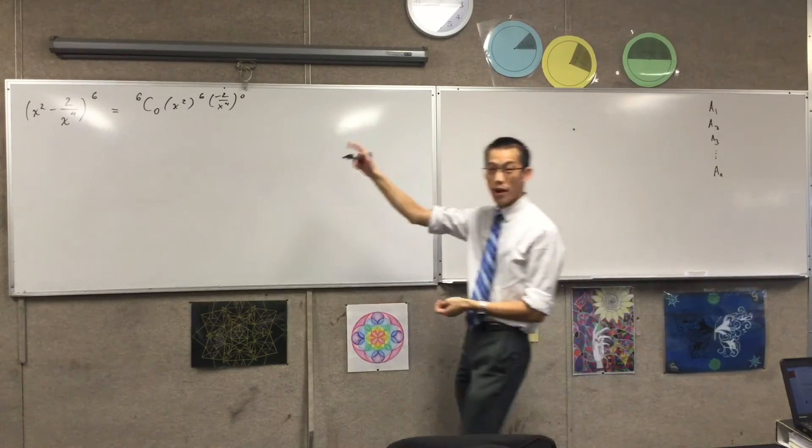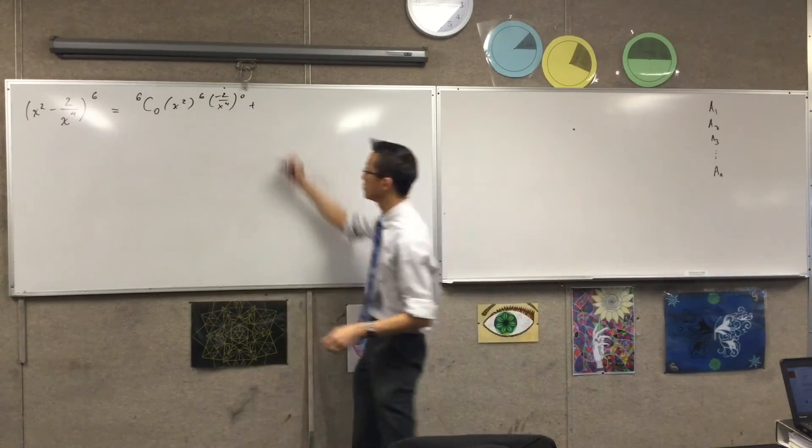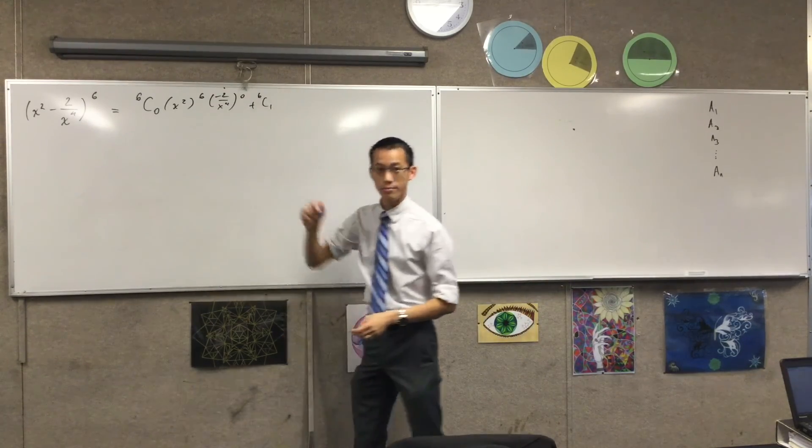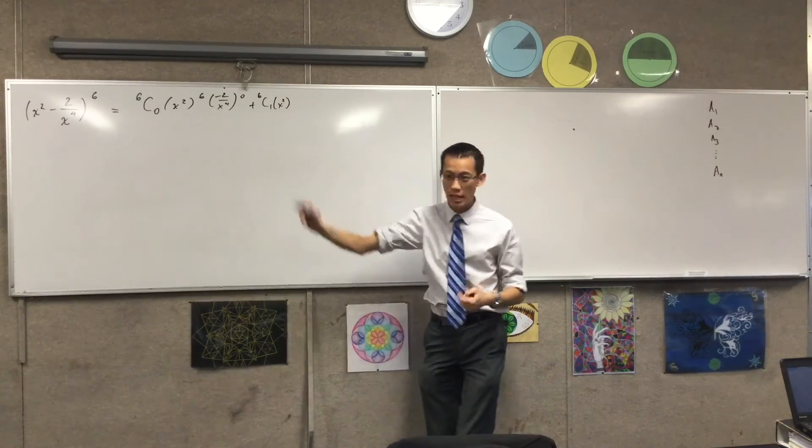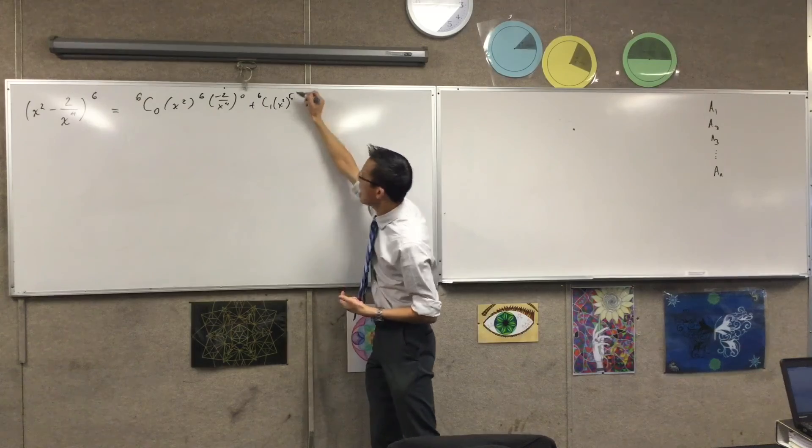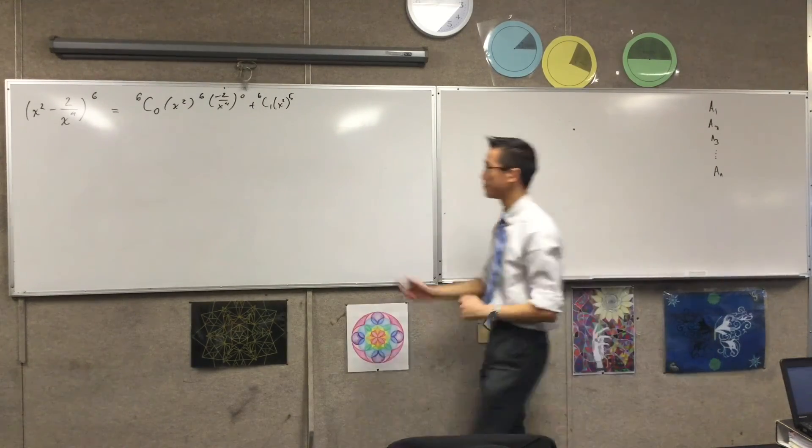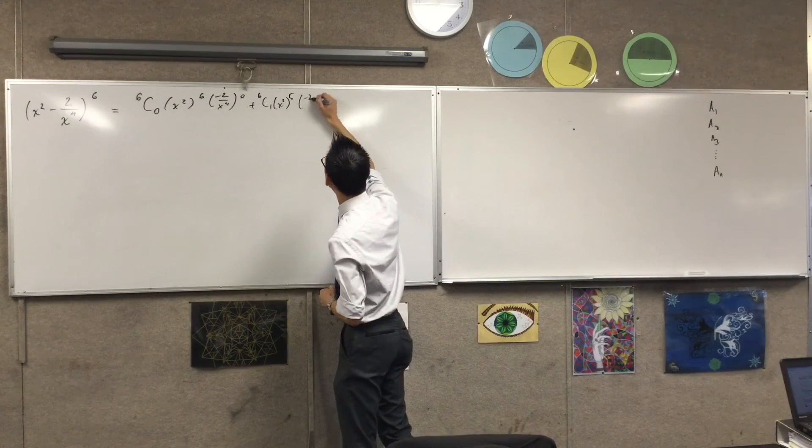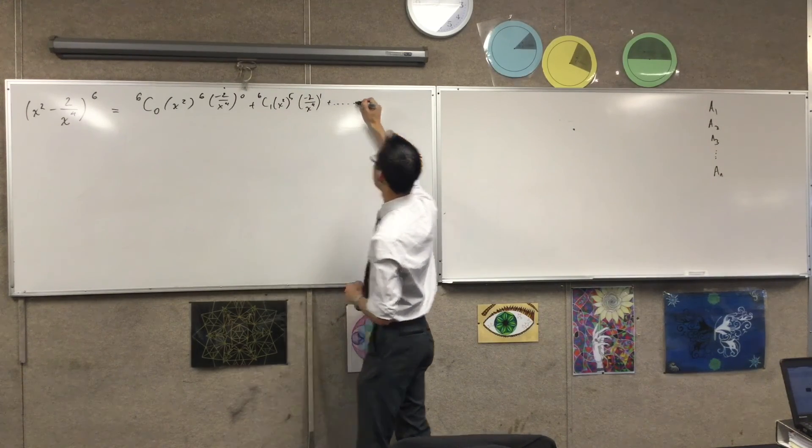So you see I'm forming the pattern here. Now, all of that work will be making the next bits really easy. When I go to the next term, this will be 6C1, which is 6. How many x squared terms are there? There will be one less, which is 5. And how many minus 2 on x to the 4 terms are there? Just the 1.